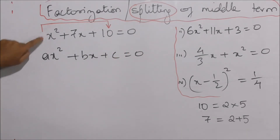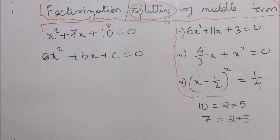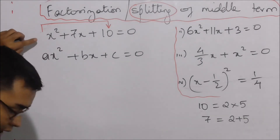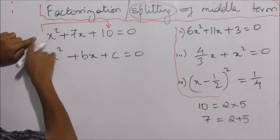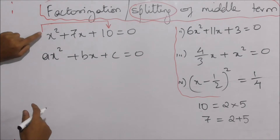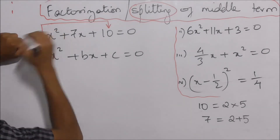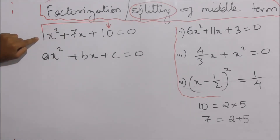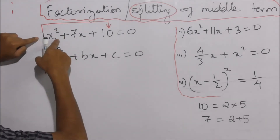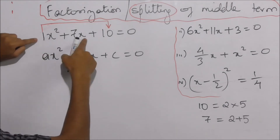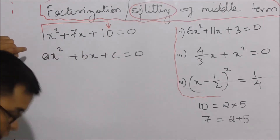If A is equal to a number and you look at the equation, it is equal to 1. The coefficient of x² is equal to 1, and the coefficient of x is equal to 10.